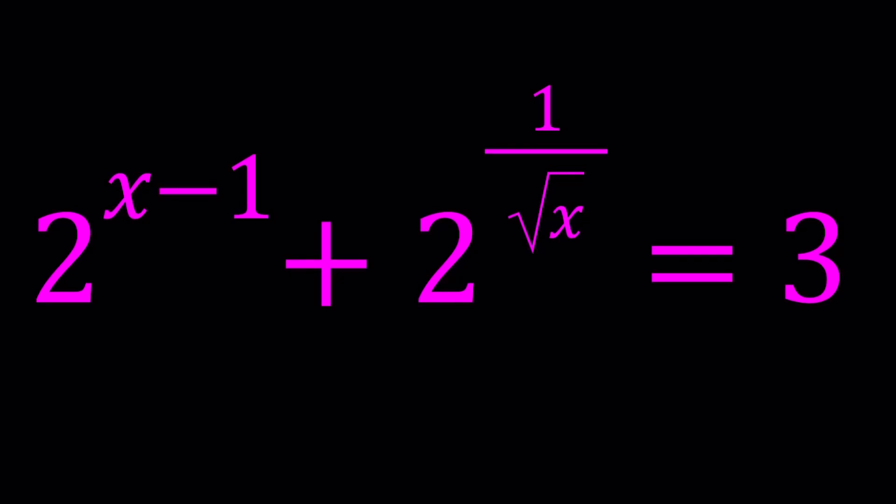Hello everyone, here I am with a beautiful equation from Romania. We have 2 to the power x minus 1 plus 2 to the power 1 over the square root of x equals 3 and we're going to be solving for x values.